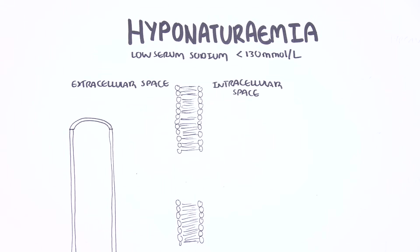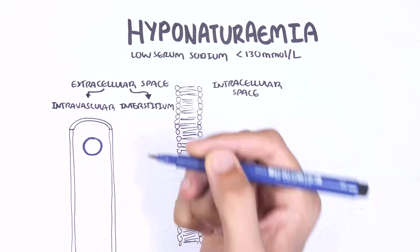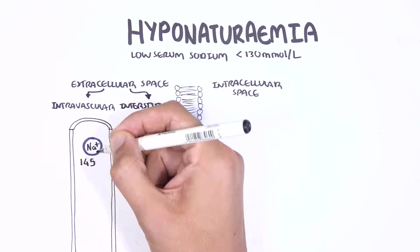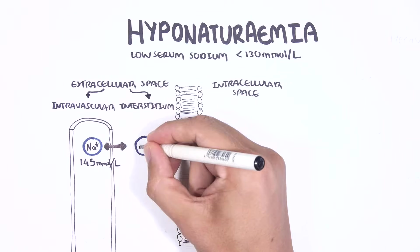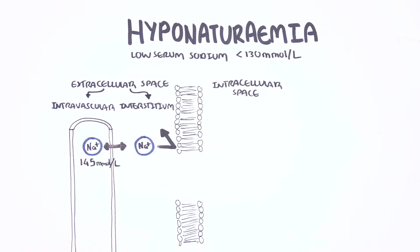Sodium is distributed unequally within the body compartments. There are three main compartments: the intracellular compartment, the interstitial compartment, and the intravascular compartment. The intravascular and interstitial space make up the extracellular fluid and is where we find most of the sodium — approximately 145 millimoles per liter.